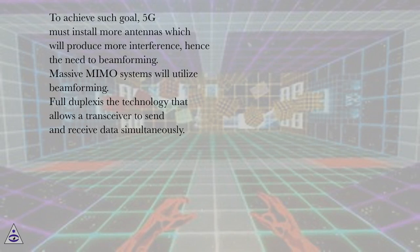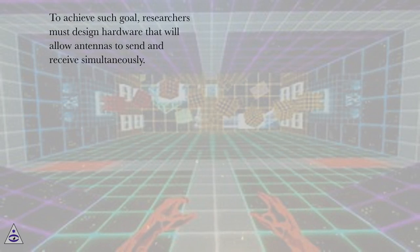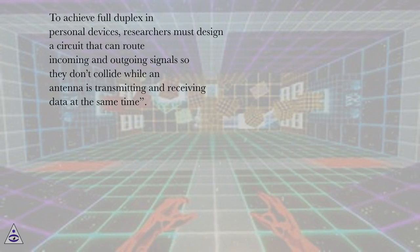Full duplex is the technology that allows a transceiver to send and receive data simultaneously. To achieve such goal, researchers must design hardware that will allow antennas to send and receive simultaneously. To achieve full duplex in personal devices, researchers must design a circuit that can route incoming and outgoing signals so they don't collide while an antenna is transmitting and receiving data at the same time.